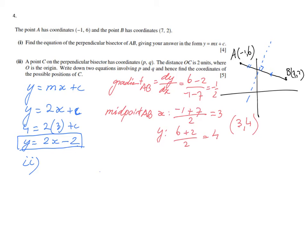Let's move on. Part II. A point C on the perpendicular bisector has coordinates (P, Q). The distance OC is two units, where O is the origin. So from the origin to that particular point is two units. Write down two equations involving P and Q and hence find the coordinates of the possible positions of C. So positions meaning more than one.